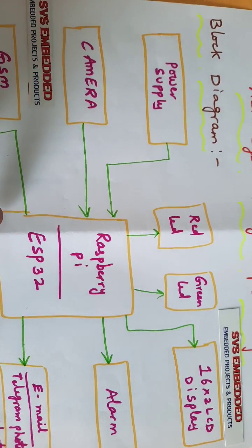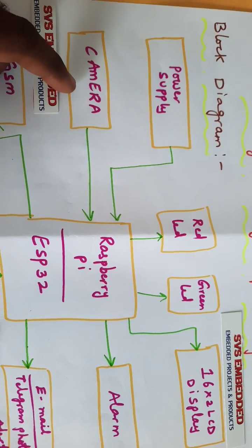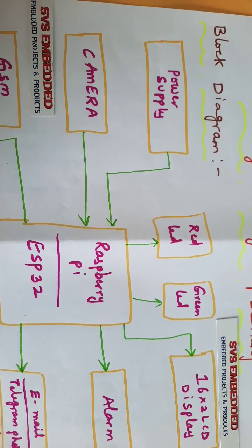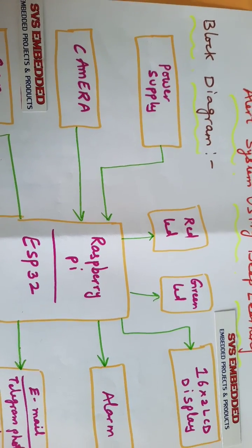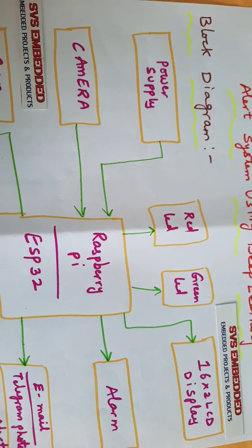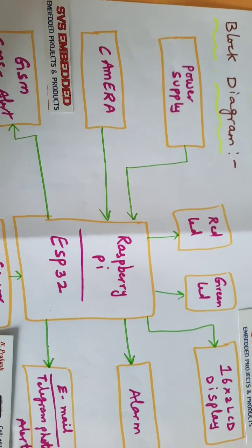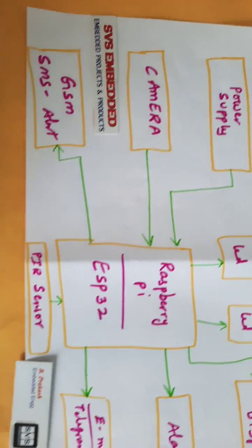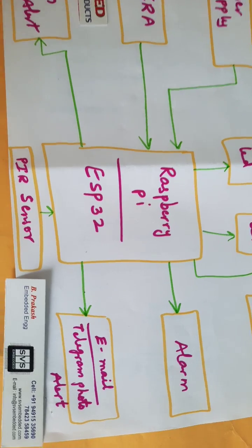This camera is the live camera, continuously taking video. When any animal came, that particular animal name should be displayed on the LCD and it will send the photo alert to Telegram app or email alert, and GSM will send the SMS alert.